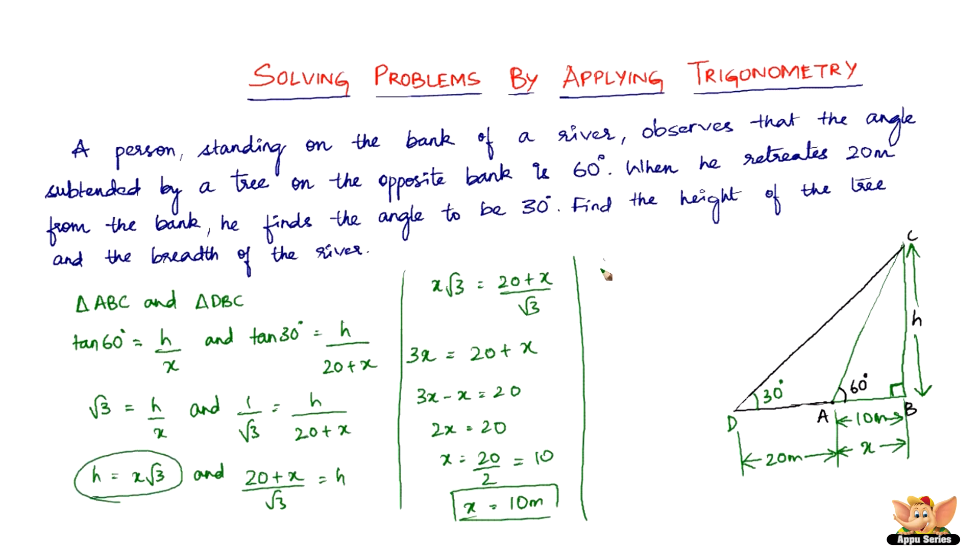Let's take this equation. We've got h equals x times root 3. So h equals 10 times root 3. Since it is a measure of height, let us substitute the value of root 3 as 1.732. So 1.732 multiplied by 10 gives us 17.32. Therefore the height of the tree is 17.32 meters.